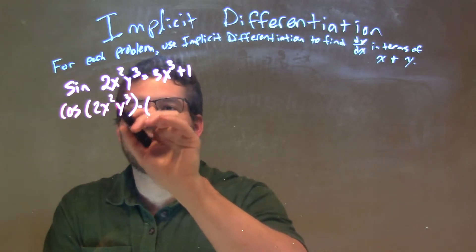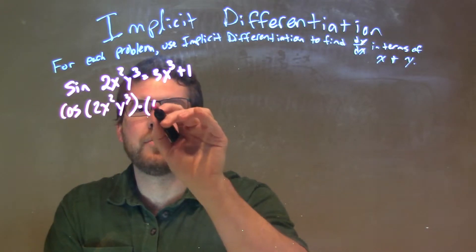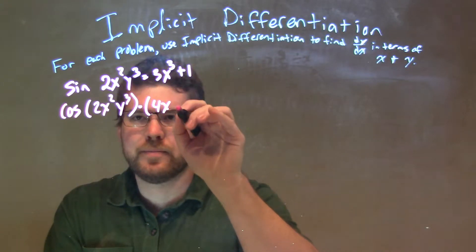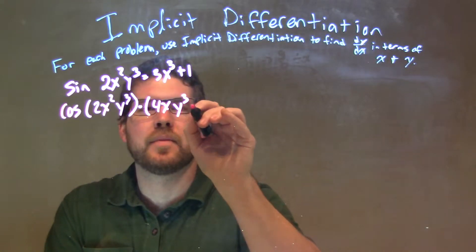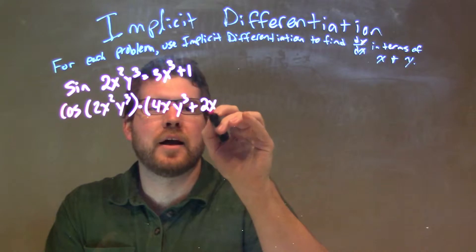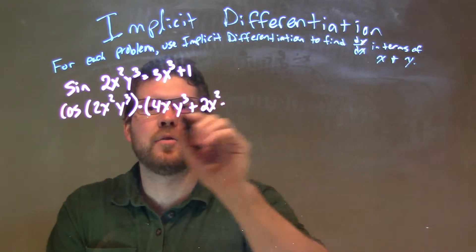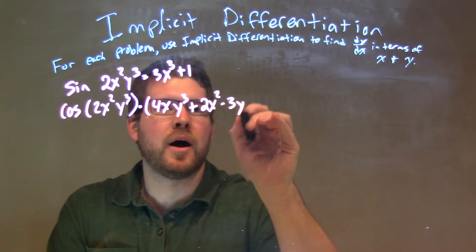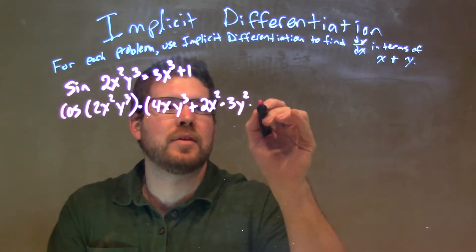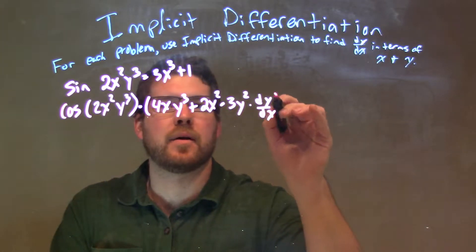Times 2 times 2 is 4, so we have 4x y cubed plus 2x squared times the derivative of y cubed, which is 3y squared times dy/dx.